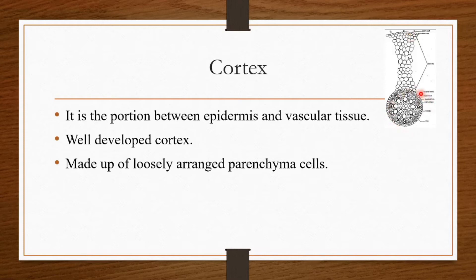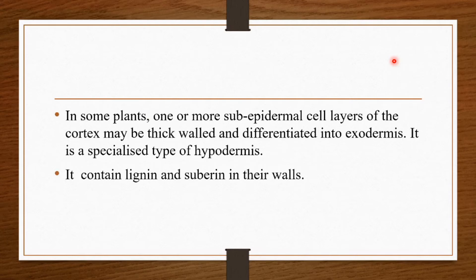Next is the cortex. It is the portion between the epidermis and the endodermis or vascular region. Monocot root has a well-developed cortex made up of loosely arranged parenchyma cells, mainly for storage function. In some plants, some hypodermal cells or one or more sub-epidermal cell layers of the cortex may be thick-walled and differentiated into a structure called exodermis.